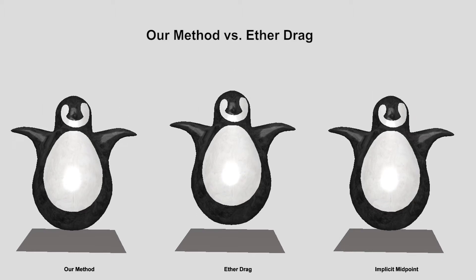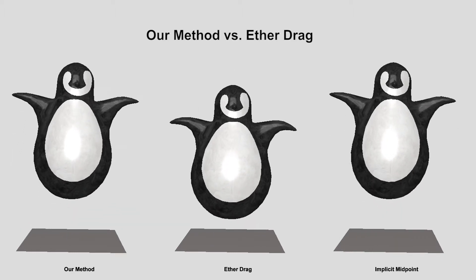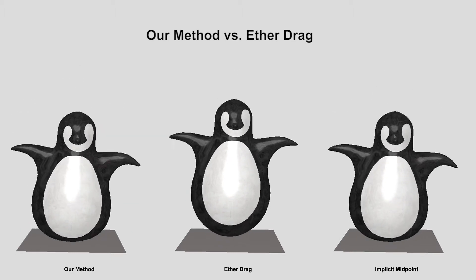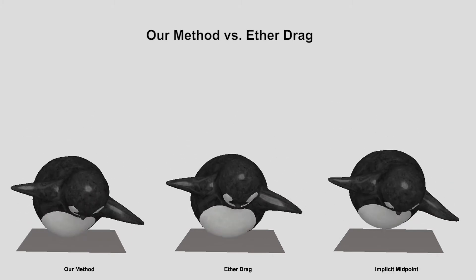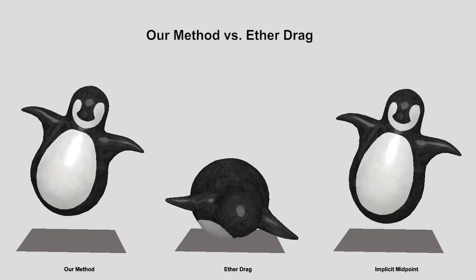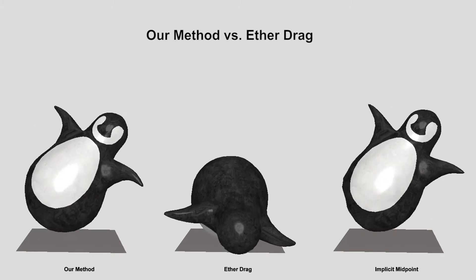In this example, we added the smallest amount of damping to prevent the penguin from exploding. With Ether drag, the damping slows down the global motion. Without damping, the simulation explodes. Our method produces a nice animation.